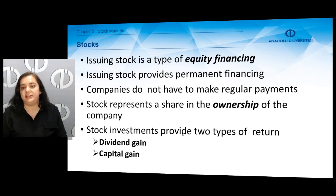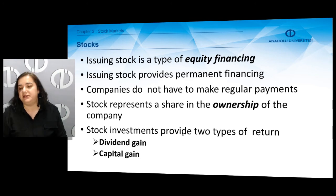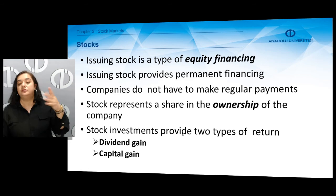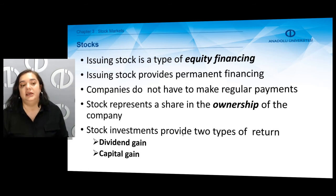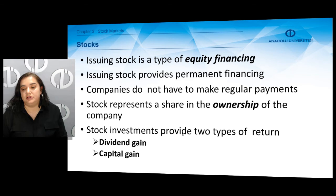Issuing stock provides permanent financing. There is no maturity, unlike bonds, and companies do not have to make regular payments as in the case of bonds — in the form of interest payments or coupon payments. Stocks do not offer regular payments. In fact, stock represents a share in the ownership of the company, so by buying stocks, by investing in stocks, investors become owners of the company.